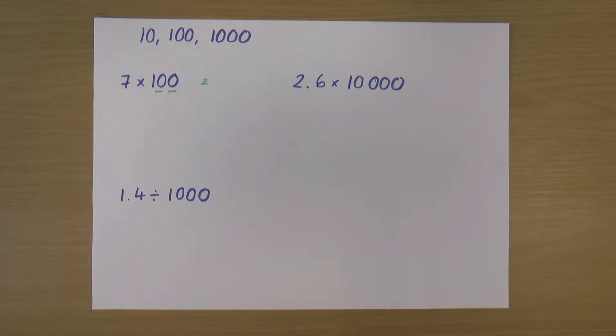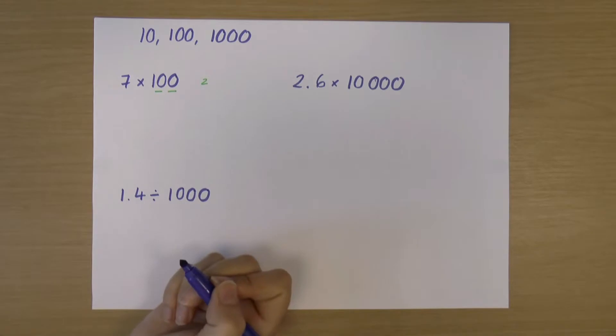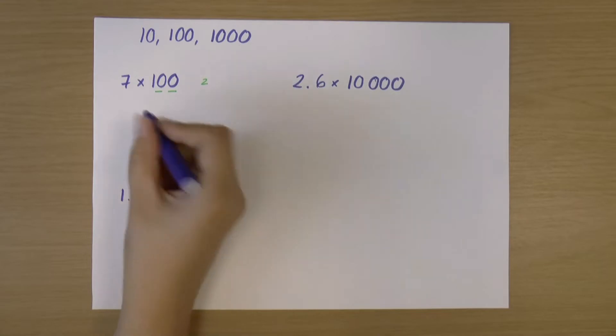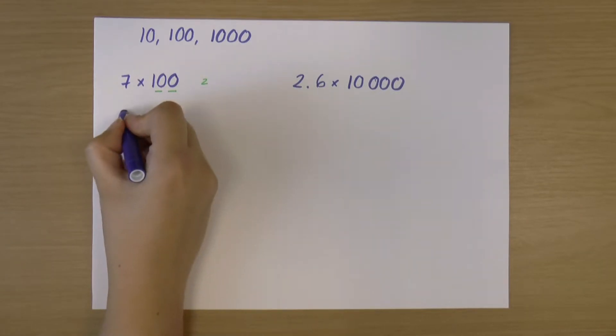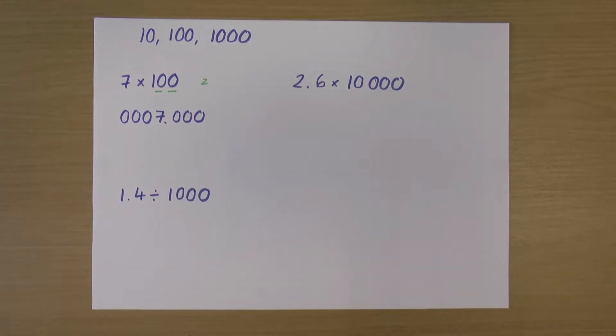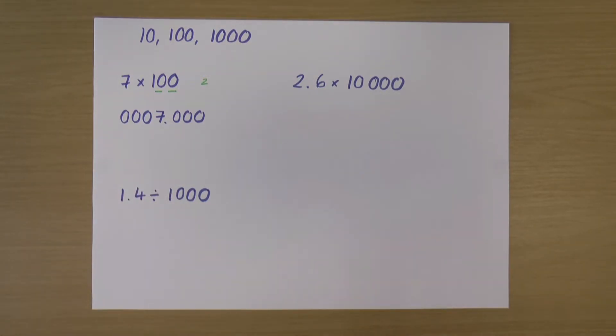Now, the important thing to remember with any number is actually we have some 0s in front and some 0s after a decimal point. So for 7, we have actually an infinite number of 0s before the 7, a decimal point, and then an infinite number of 0s after the 7. This doesn't affect what number we've got here. This is still the number 7, just an alternative representation.